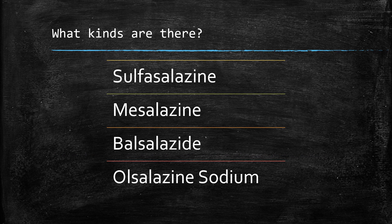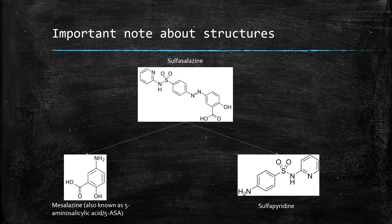In terms of the structures, sulfasalazine and mesalazine are the most common. Sulfasalazine, if broken down, is broken down into mesalazine as we see on the left and sulfapyridine as we see on the right, which will be important for the mechanism of action. Just know that mesalazine is also known as 5-ASA or 5-amino salicylic acid.